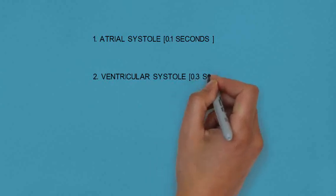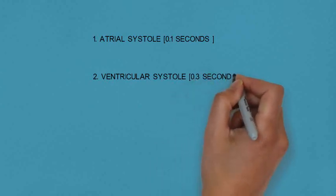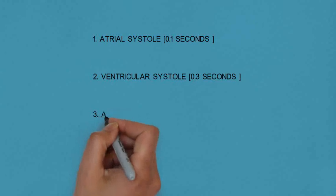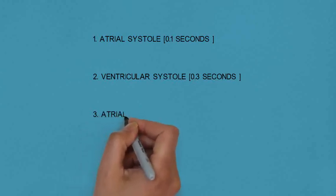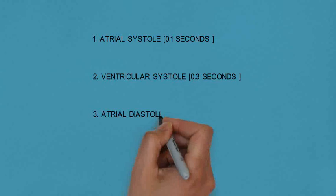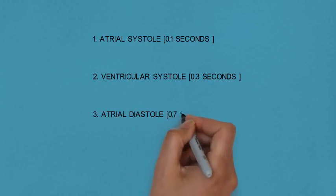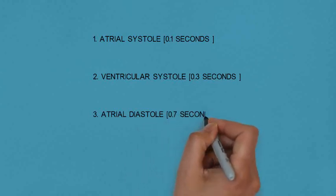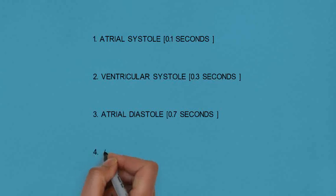The third phase is atrial diastole, lasting about 0.7 seconds. This is the relaxation of the atria during which they fill with blood from the large veins, the superior and inferior vena cavae.